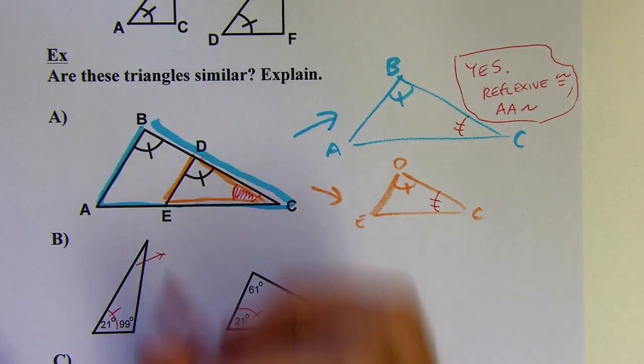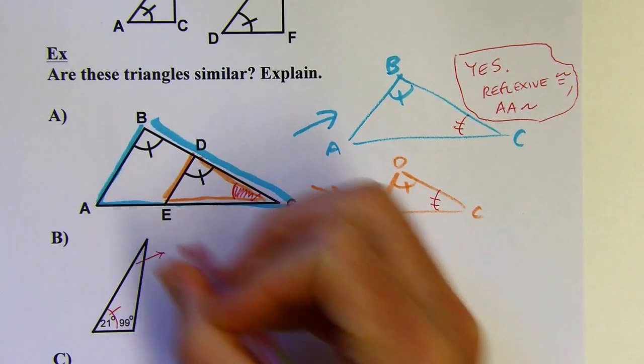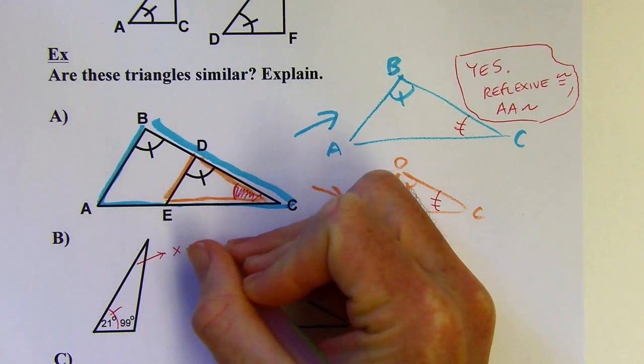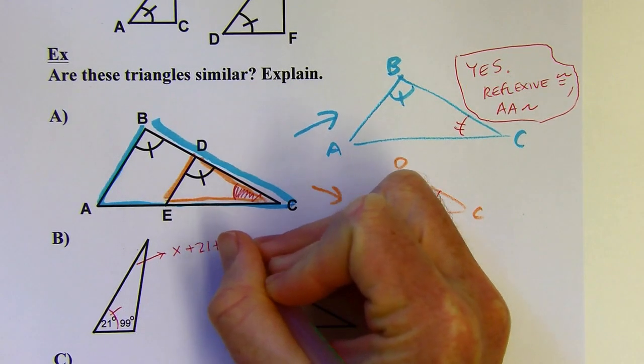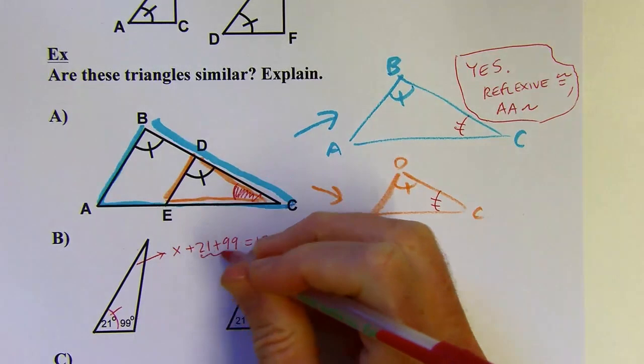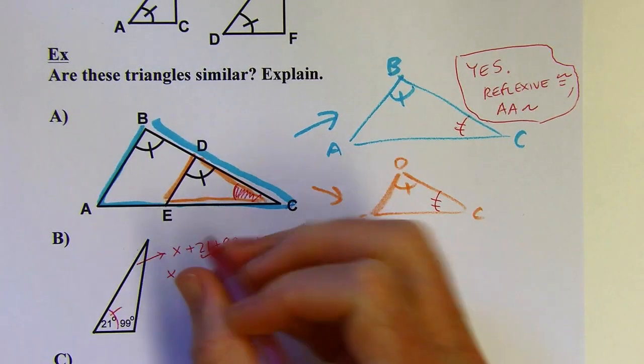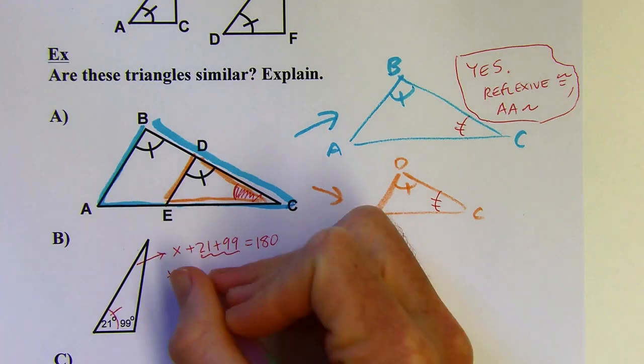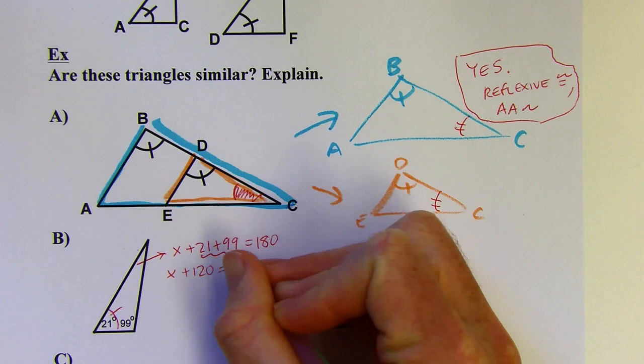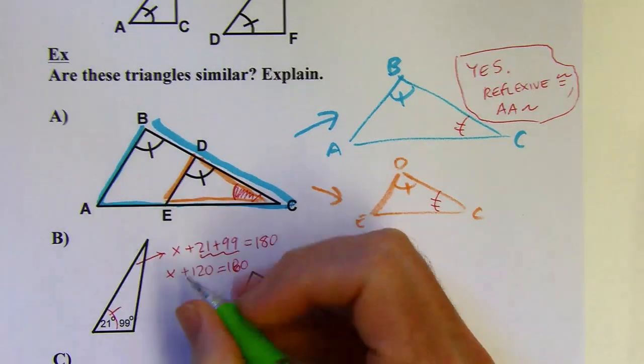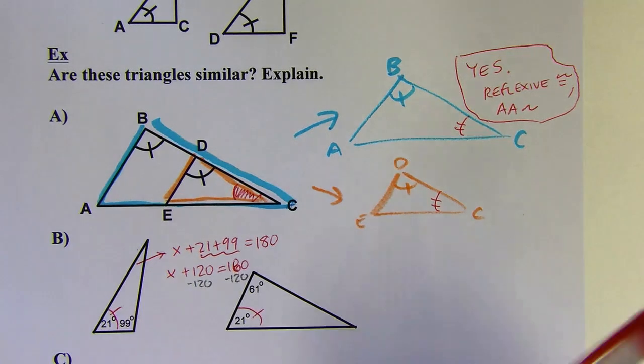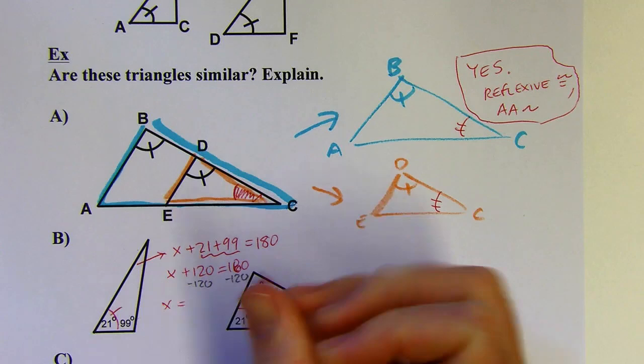I'll call this x. x plus 21 plus 99 is going to have to be 180 because of the triangle angle sum theorem. I'll combine those like terms: 180, and then I'll subtract 120.